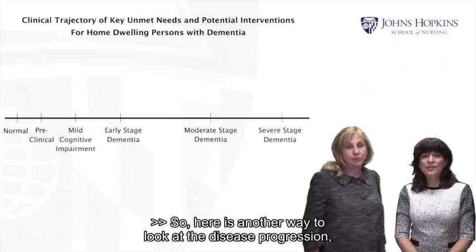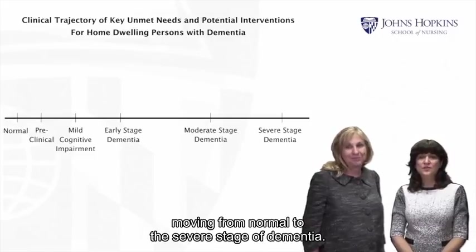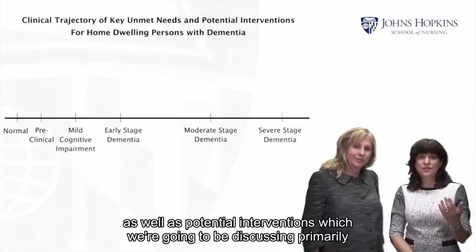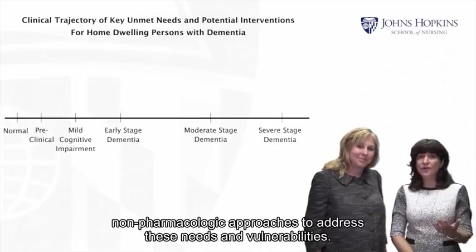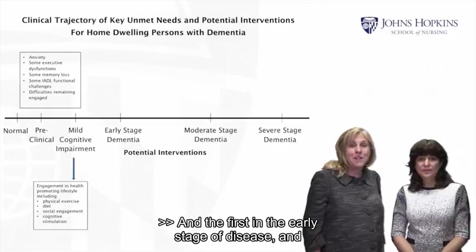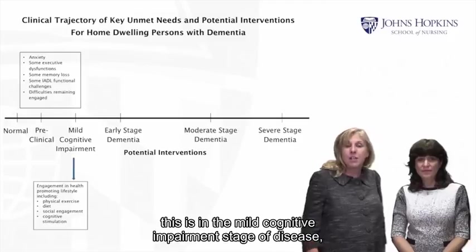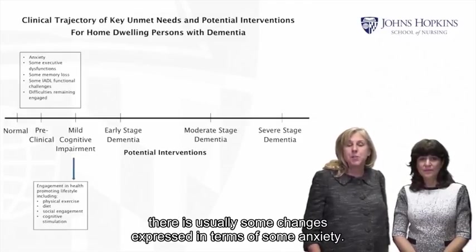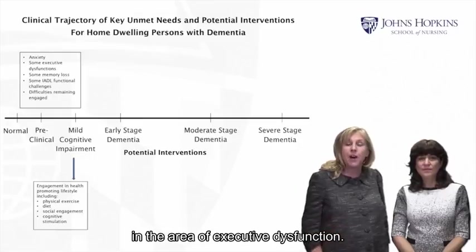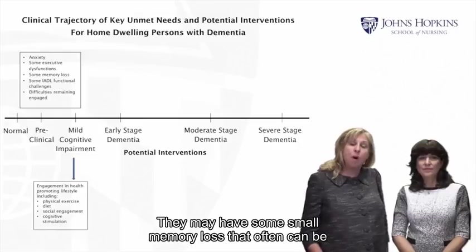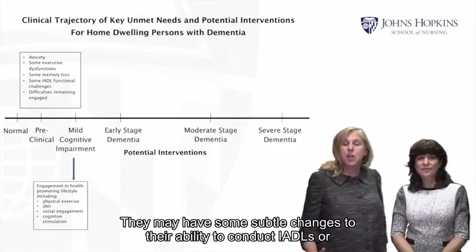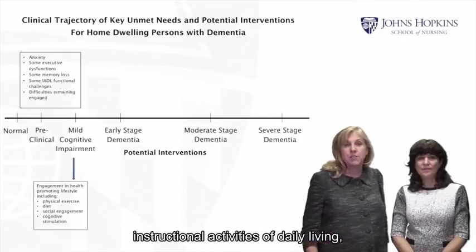Here is another way to look at disease progression moving from normal to the severe stage of dementia, mapping needs at each stage as well as potential non-pharmacologic interventions. In the early stage — the mild cognitive impairment stage — there is usually some anxiety, early memory changes particularly in executive dysfunction, and sometimes small memory loss that can be hidden from loved ones. There may also be subtle changes in the ability to conduct IADLs, or instrumental activities of daily living — functional tasks like paying bills or answering the phone.